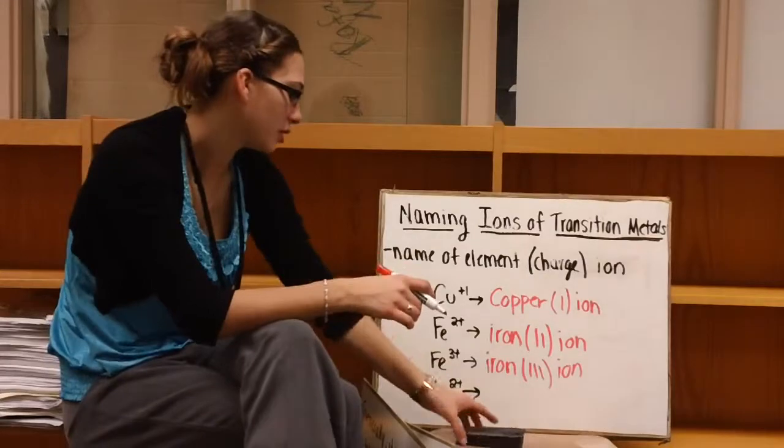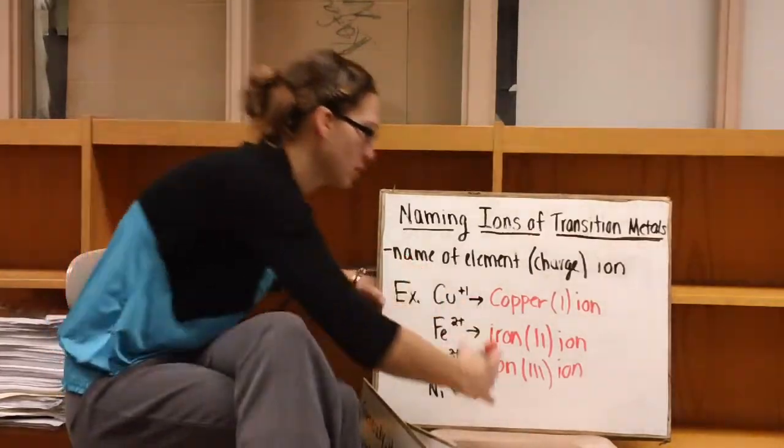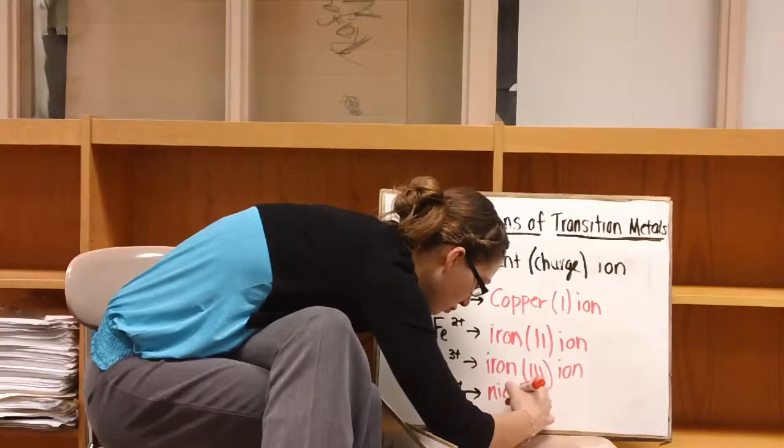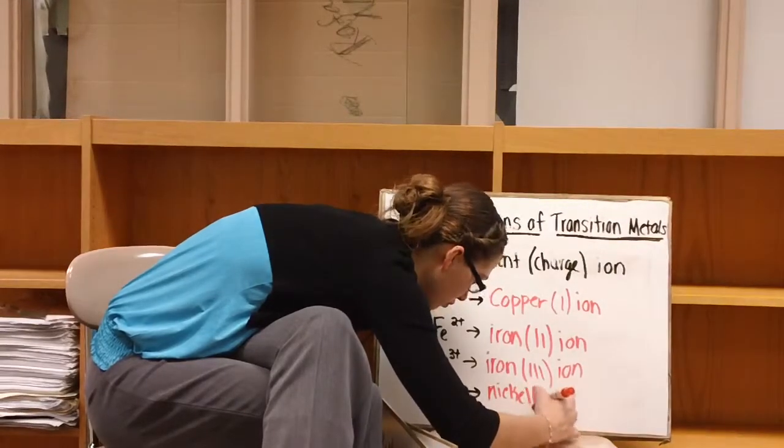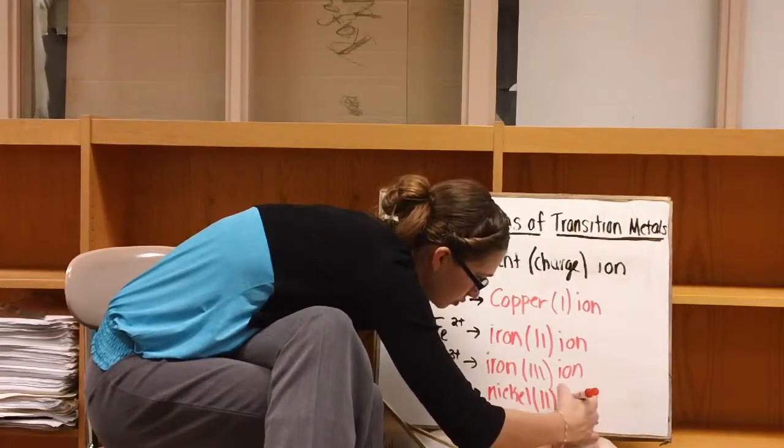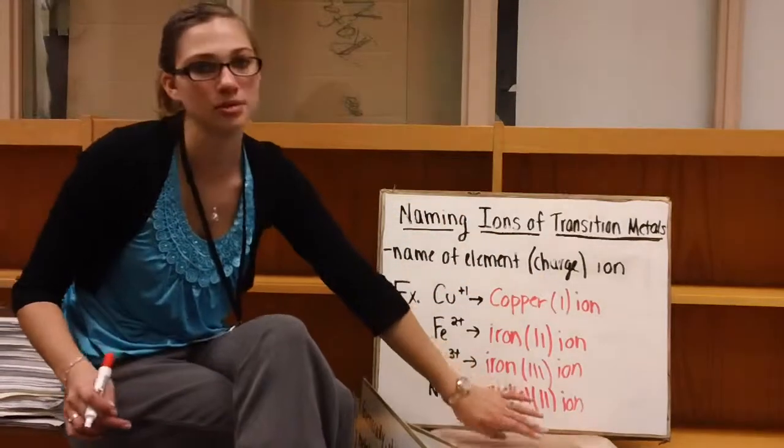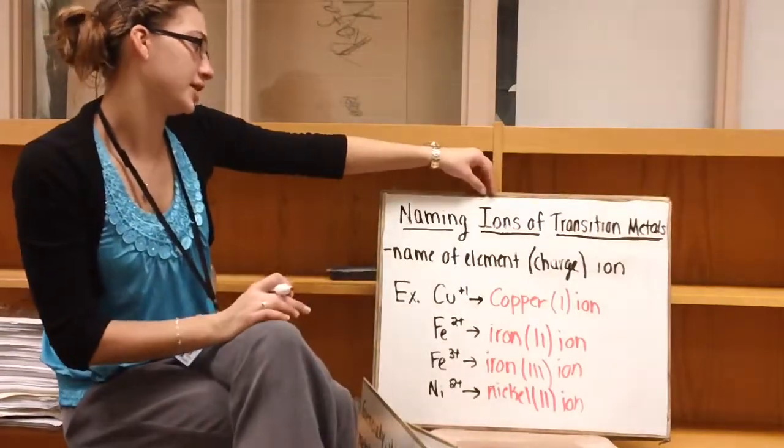Lastly here, we have nickel with a two plus charge. So we write nickel. In parentheses, we put the Roman numeral two, and then the word ion.